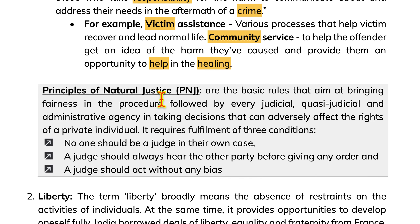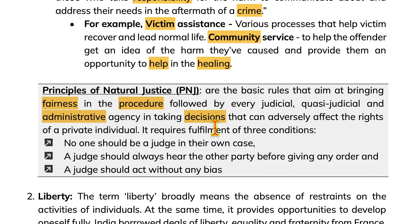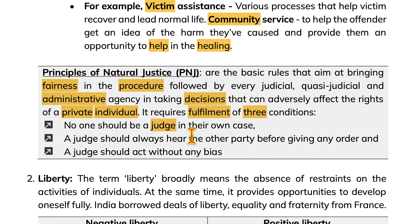Principles of natural justice are the basic rules that aim at bringing fairness in procedure, followed by every judicial, quasi-judicial and administrative agency in taking decisions that can adversely affect the rights of a private individual. It requires fulfillment of three conditions: no one should be a judge in their own case; a judge should always hear the other party before giving any order; and a judge should act without any biases.